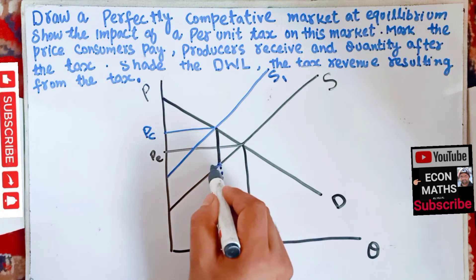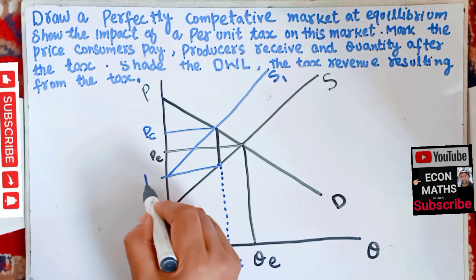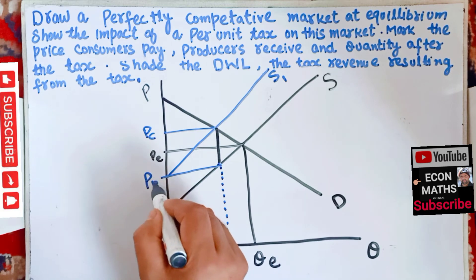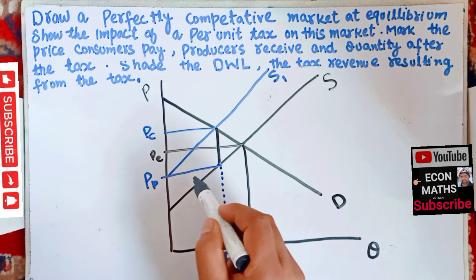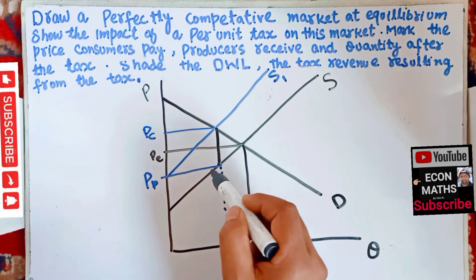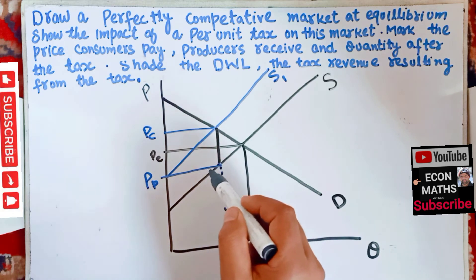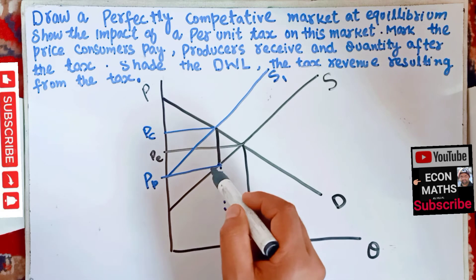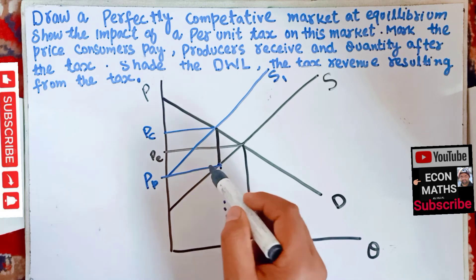And here, let us say this is PP — P subscript P. This PP is the price producers get after paying the tax.